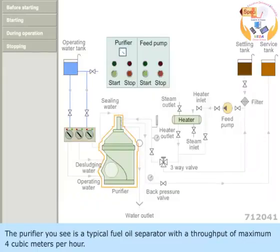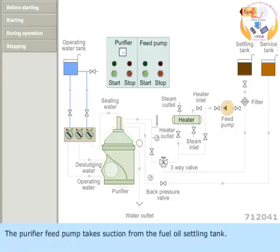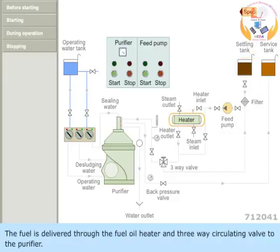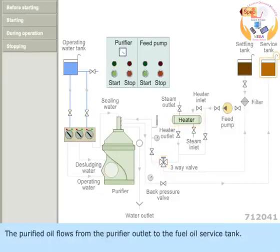The purifier you see is a typical fuel oil separator with a throughput of maximum 4 cubic meters per hour. The purifier feed pump takes suction from the fuel oil settling tank. The fuel is delivered to the fuel oil heater and three-way circulating valve to the purifier. The purified oil flows from the purifier outlet to the fuel oil service tank.